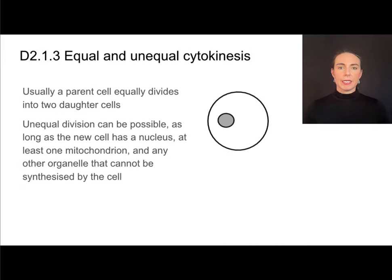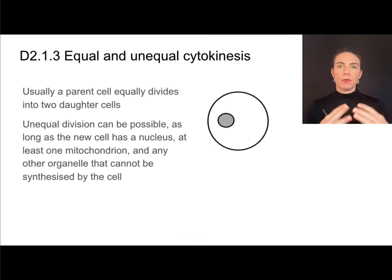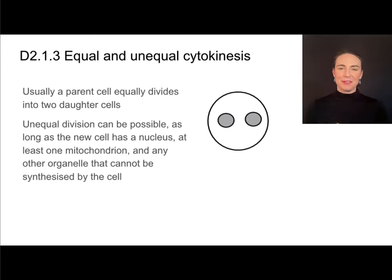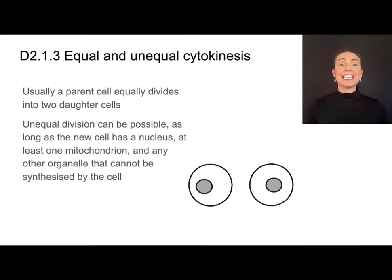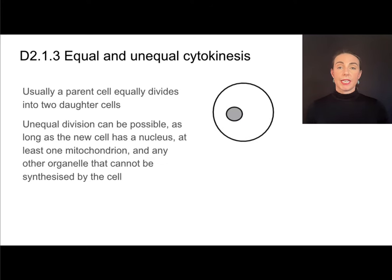A parent cell has nuclear material like chromosomes, and when it's getting ready to divide it needs to make a copy of its genetic material, giving it two batches of nuclear material. Usually the parent cell will divide equally into two daughter cells — an even division of the cytoplasm — so I end up with two equal-sized cells that each have nuclear material and about the same amount of cytoplasm including the organelles. Unequal division is not as common but is possible, and we'll talk about some examples like gamete production.